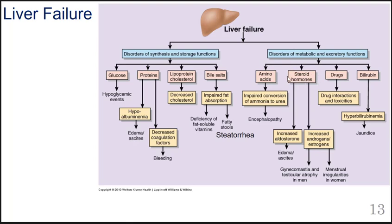Steroid hormones metabolized by the liver also include androgens such as testosterone and estrogens in both males and females. If the liver is not breaking them down, levels can increase above normal, leading to exaggerated features including gynecomastia in males, where actual breast tissue develops and increases in size, testicular atrophy, and menstrual irregularities in females due to higher estrogen levels. An increased level of estrogen in the body can also lead to spider angiomas, which we'll come back to in the case study.